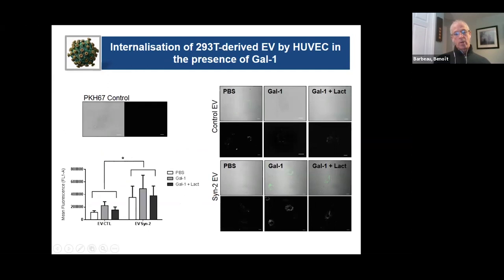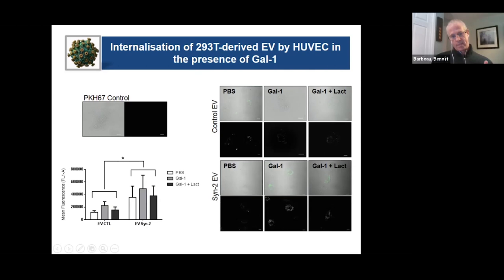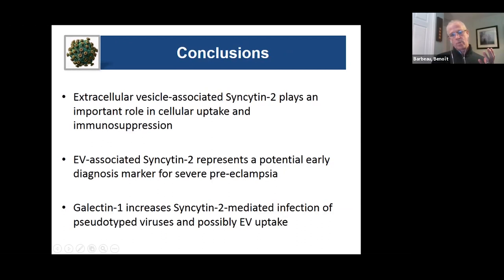Our model is that pseudotype viruses interact better in the presence of galectin-1, which helps make a bridge between the receptor and the syncytin-2 or syncytin-1 protein. Our focus being syncytin-2, we decided to determine whether we could see the same thing with extracellular vesicles produced from HEK293T cells plus or minus galectin-1, using HUVEC cells. Our data up to now shows a certain increase, but not a very important increase in extracellular vesicle uptake. We also used lactose as an inhibitor of galectin-1, and there is a trend of increase, but the same trend exists for extracellular vesicles produced without syncytin-2. More study needs to be performed to see whether this is real, but we are expecting that galectin-1 is affecting the uptake of these extracellular vesicles in different cell contexts.